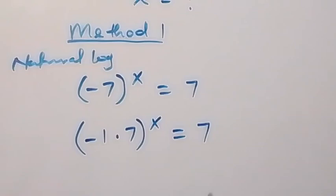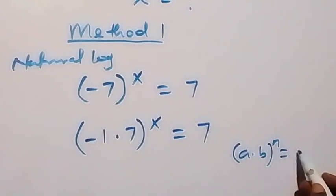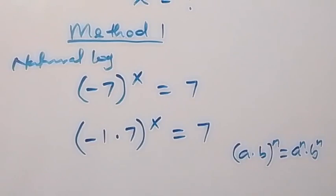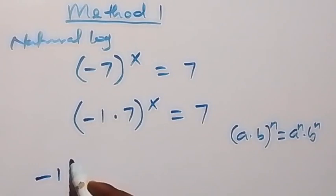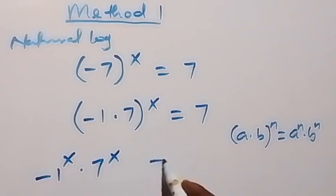When we have a times b raised to power n, from the laws of indices, this is a times b raised to power n. So from here, this becomes minus 1 raised to power x, times 7 raised to power x, which we equate to 7.